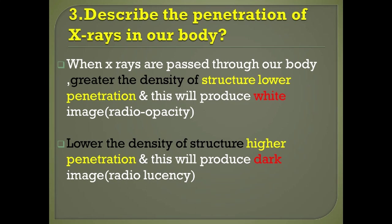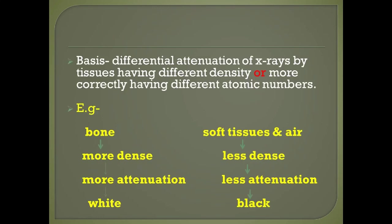Question number three: describe the penetration of X-rays in our body. When X-rays are passed through our body, greater the density of the structure, lower will be the penetration, and this produces a white image called radio-opacity. Lower the density of the structure, higher will be the penetration, producing a dark image called radio-lucency. This is based on different attenuation of X-rays by tissues having different densities and different atomic numbers.